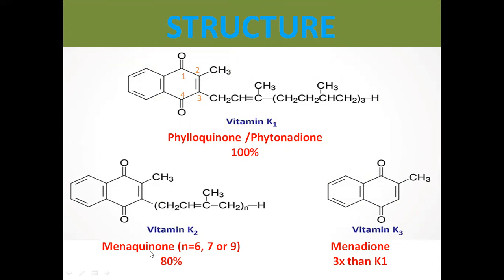Vitamin K2 is 80% potent. Vitamin K3, also known as menadione, is three times more potent than Vitamin K1. It is a synthetic analogue and exists as a diphosphate ester.